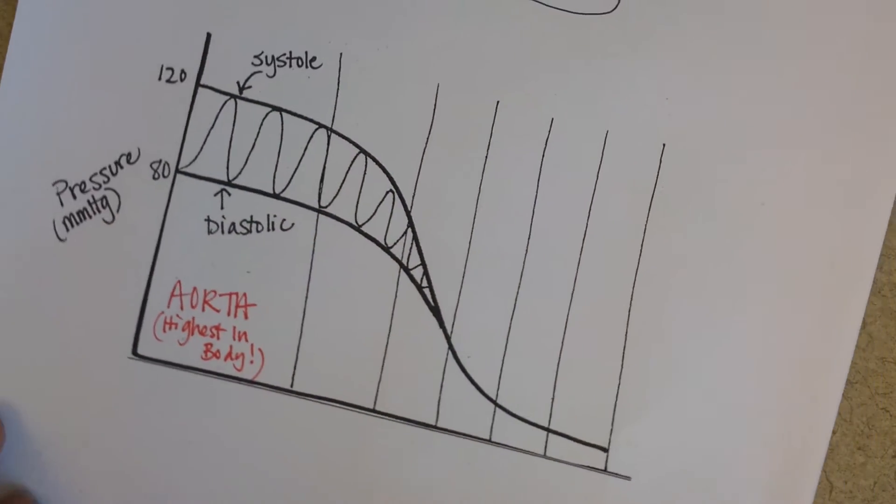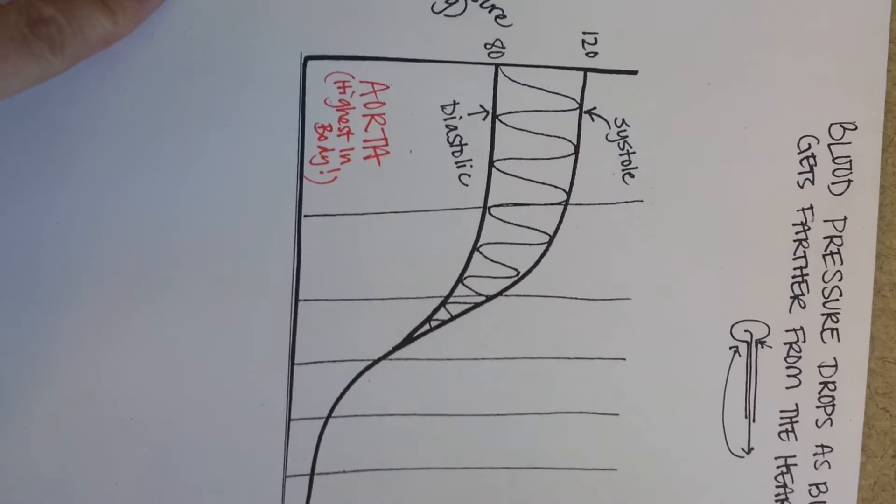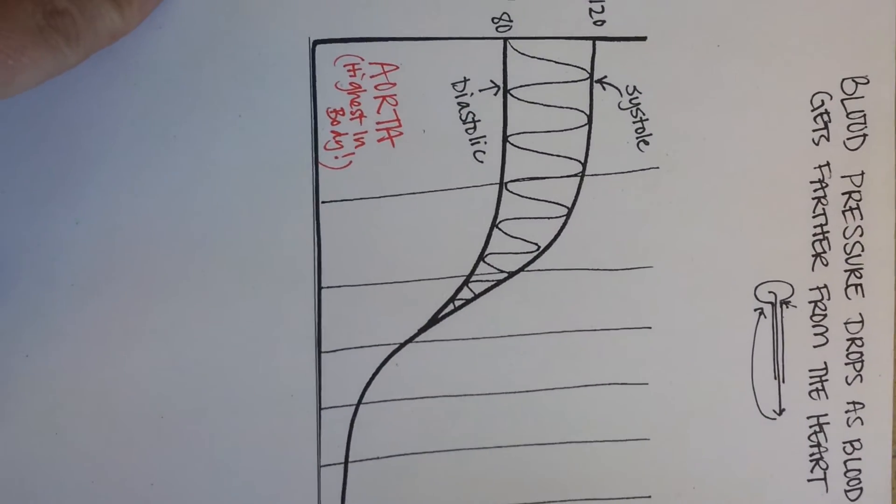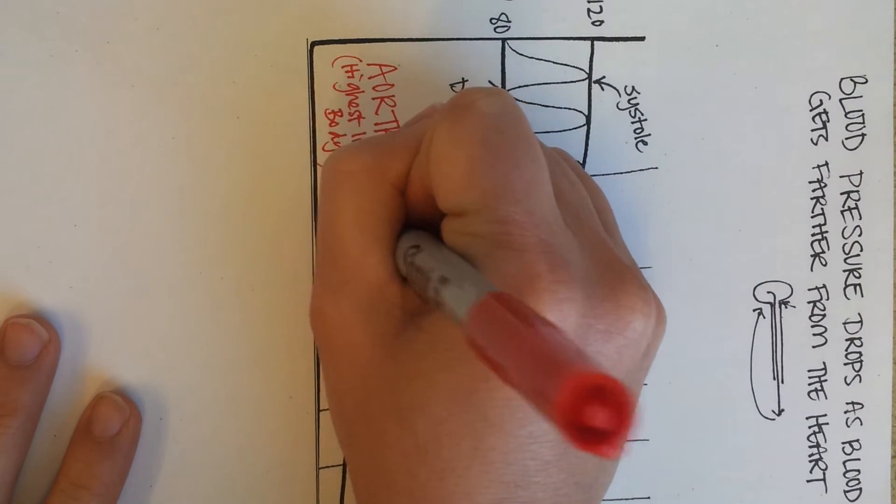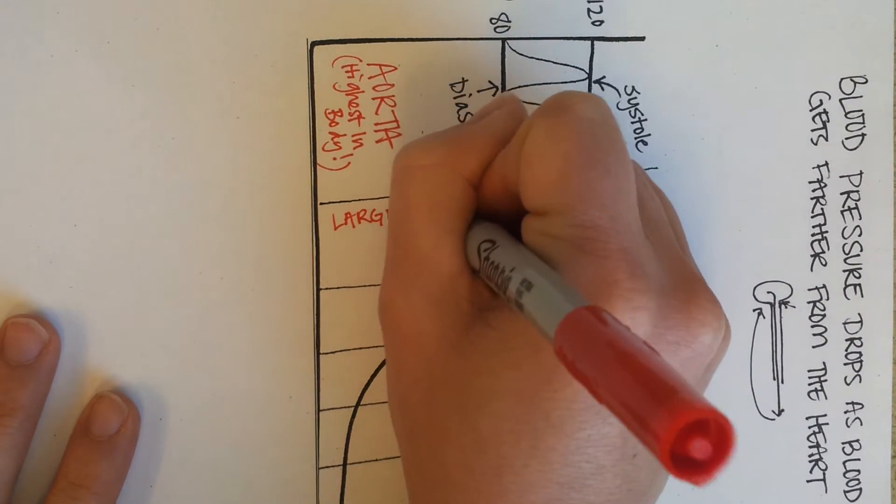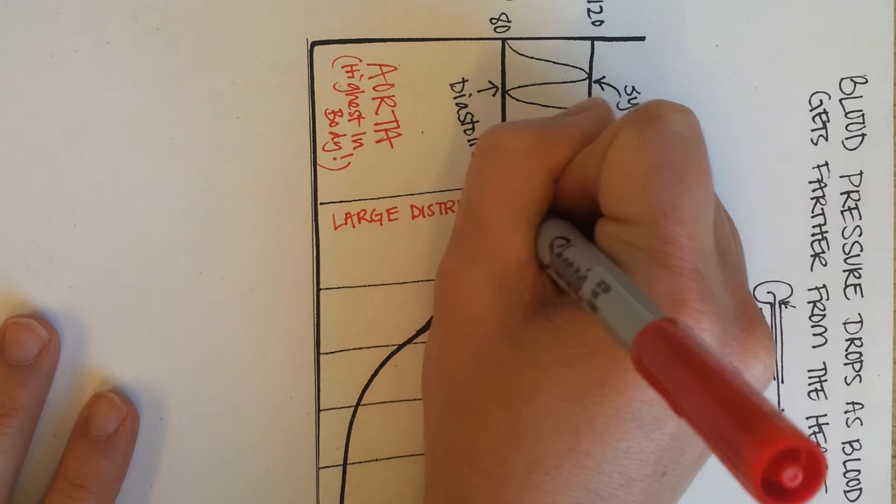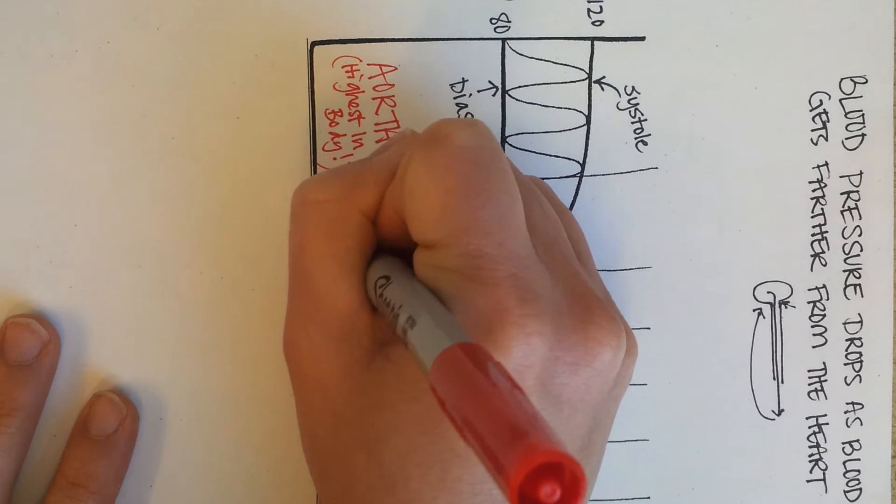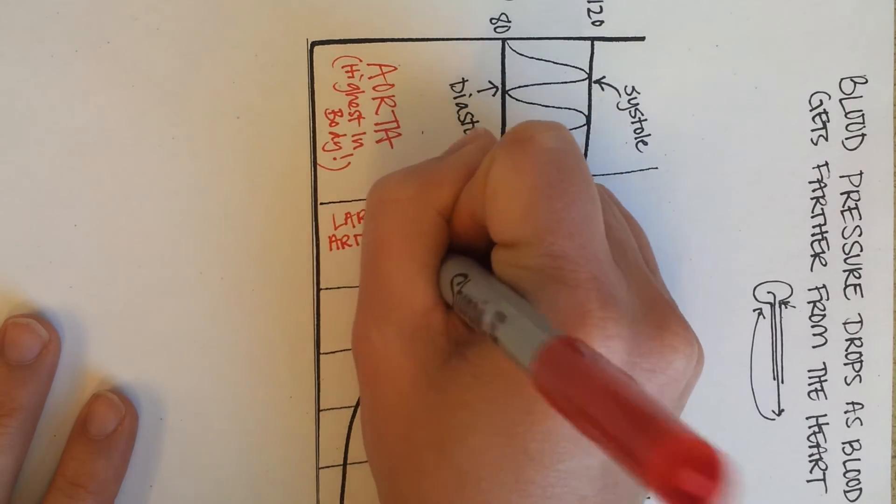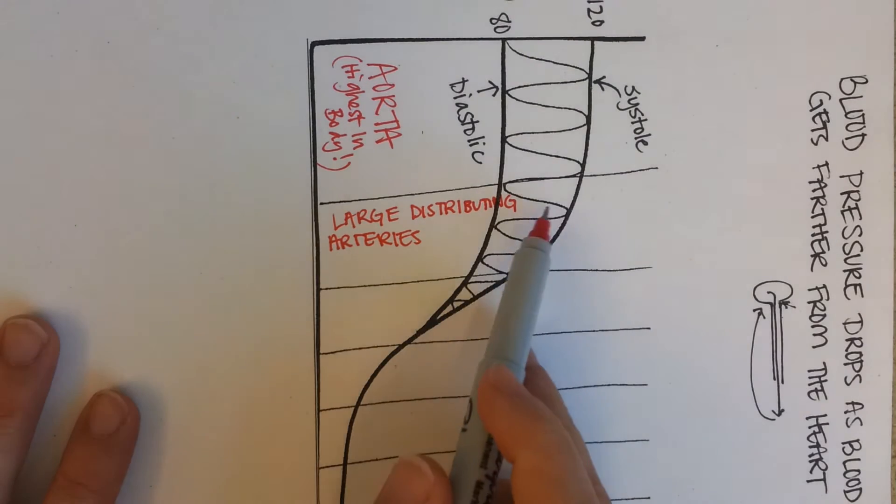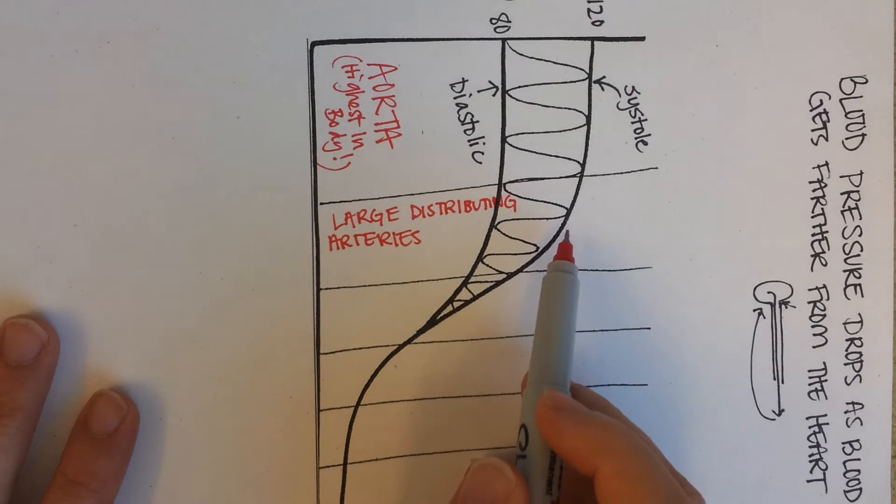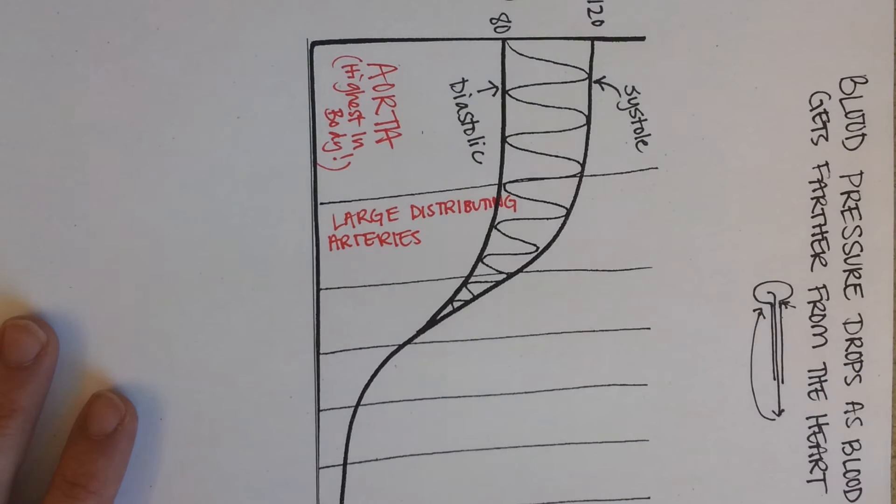So the next, I'm going to actually turn the paper sideways. So the large distributing arteries, those would be like the brachiocephalic and the renal artery. You can see that pressure is dropping off a little bit. You still have what's called a pulse pressure that you can feel on those arteries.